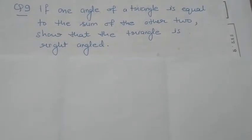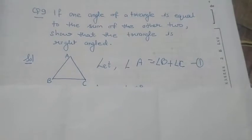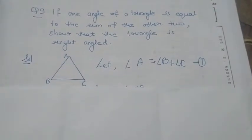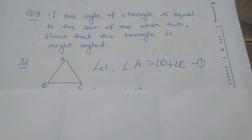In this question, we will first take, let angle A equal angle B plus C, as it is given one angle of a triangle is equal to the sum of the other two.